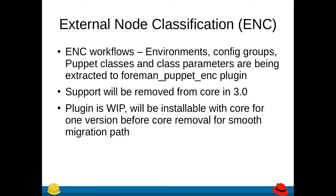The plan is to have the plugin installable alongside core for a smooth migration path if you wish to keep using this functionality. Another outcome from the community survey was that this workflow — specifically class parameters — is used less than fact and report processing. Fact and report processing was used by about 70% of users who use config management, but class parameters were only used by around 60%, and similar numbers apply for Puppet classes and environments. So this is going to be quite a large change, and we want to make it as smooth as possible for both users who don't use Puppet and those who want to continue using Puppet in the way they are used.